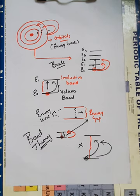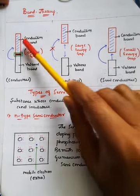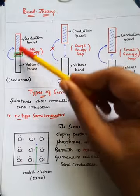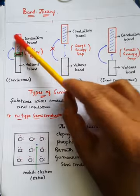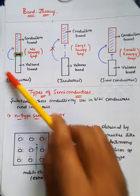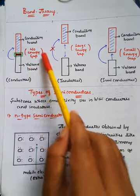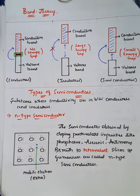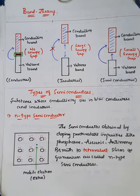Looking at the diagrammatic representation of band theory: the bands represent energy levels. The lower band drawn in black is the valence band, and the upper band in red is the conduction band. This representation is shown for all three types: conductors, insulators, and semiconductors. In case of conductors, the conduction band and valence band are closely interlinked — there is no energy gap. Whenever there is no energy gap, electrons present in the valence band can easily jump to the conduction band. Therefore in a conductor there is zero or negligible energy gap.